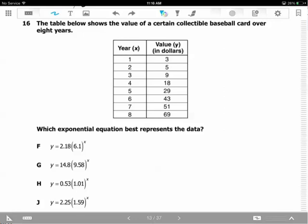The options are F, G, H, and J, with equations like y = 2.18(6.1)^x, y = 14.8(9.58)^x, and so on. How can we solve this problem? Well, there are many ways, but maybe the best way is to use x = 1 in each equation.